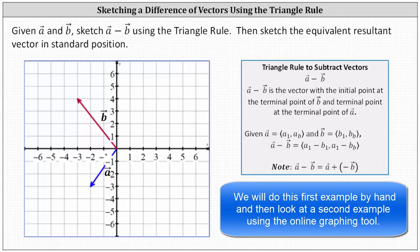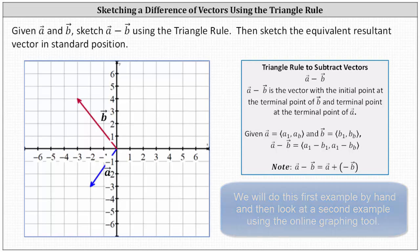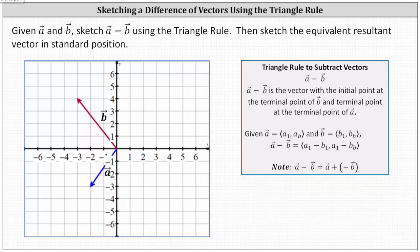Before we begin, let's find the component form for vectors a and b. Notice vector b has an x component of negative three and a y component of positive four. And vector a has an x component of negative two and a y component of negative three.